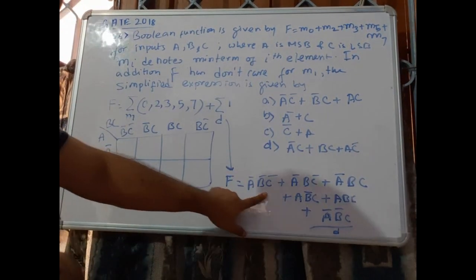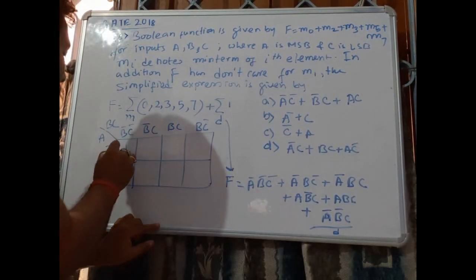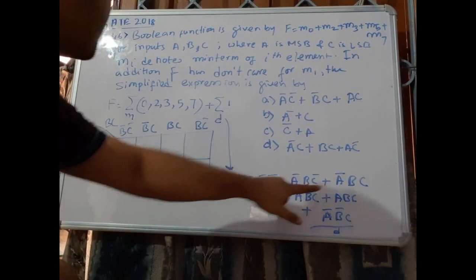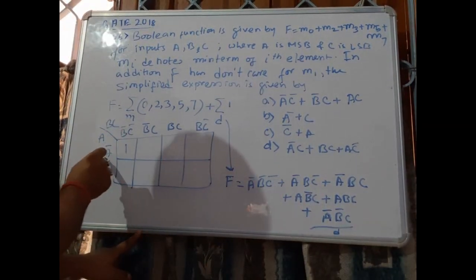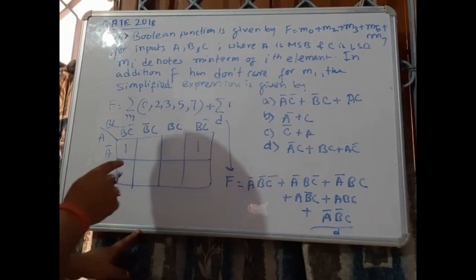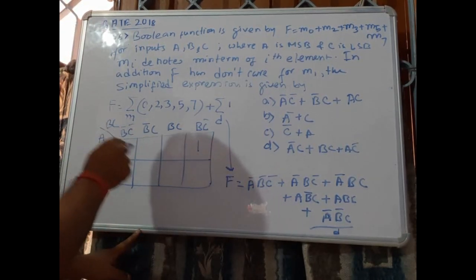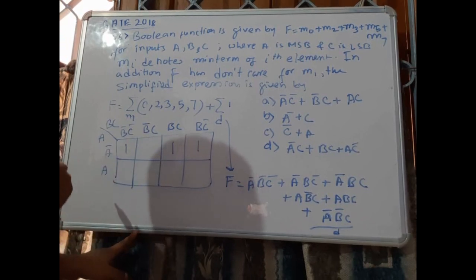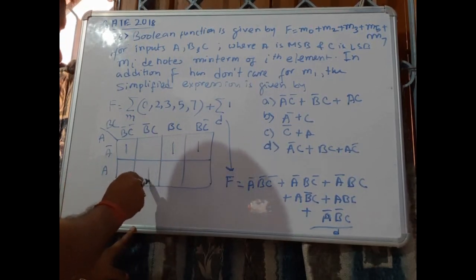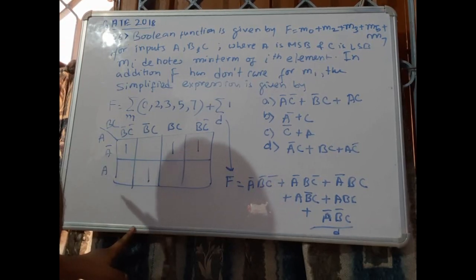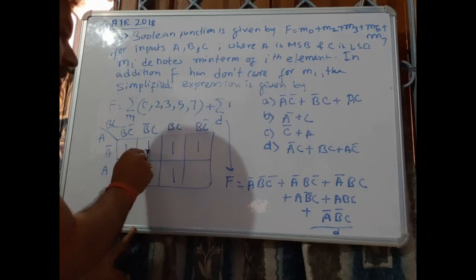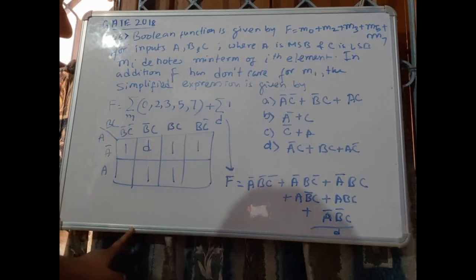Filling in the K-map: ā b̄ c̄ gives a 1, ā b c̄ gives a 1, ā b c gives a 1, ab̄c gives a 1, and ā b̄ c is the don't care combination, marked with X.